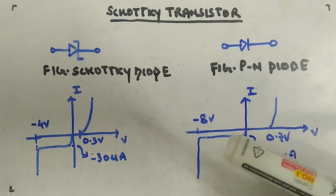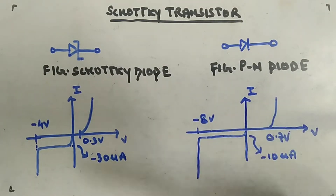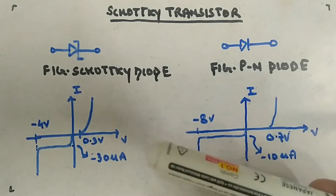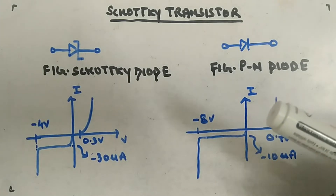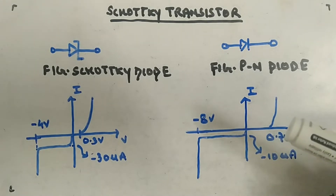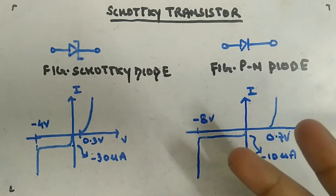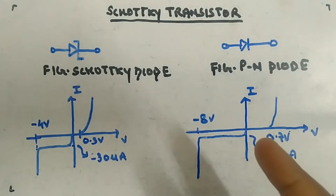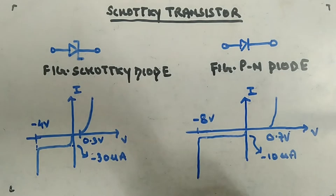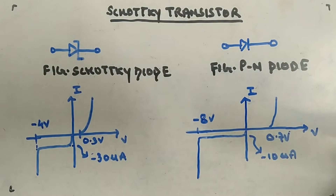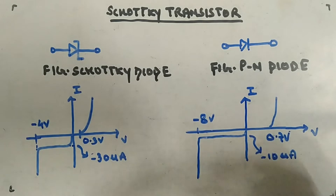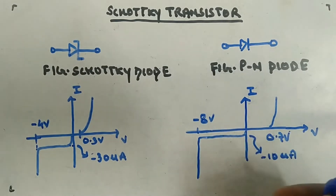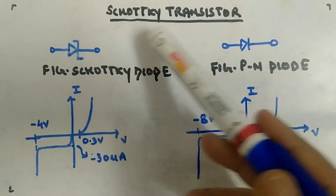We have already completed the saturated version of BJT logic family. Now we are moving towards non-saturated BJT logic family. There were two logic families inside this section: Schottky ETL and ECL (Emitter Coupled Logic). We will start with Schottky TTL. You should know the Schottky transistor and Schottky diode so that you will be able to grasp Schottky TTL — it is just like TTL but with a Schottky transistor.